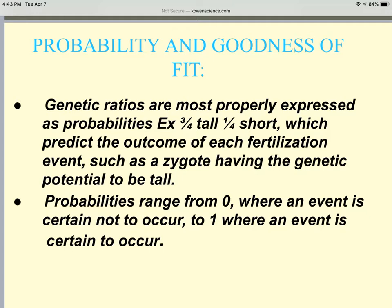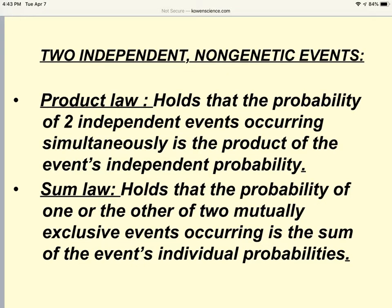Each offspring has a 75% chance of being tall and a 25% chance of being short. Probability can range from zero, where an event is certain not to occur, or one, which represents 100%, where an event is certain to occur. When we deal with two independent non-genetic events, we can look at the product law and the sum law. The product law holds that the probability of two independent events occurring simultaneously is the product of the event's independent probability. The sum law holds that the probability of one or the other of the two events occurs is the sum of the individual probabilities.